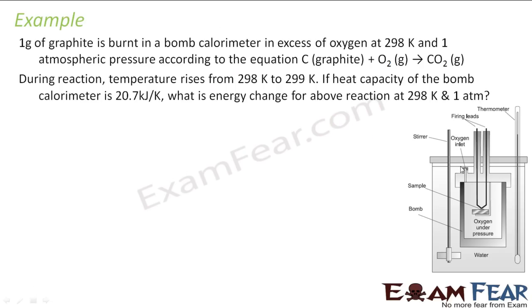Let's take one example. One gram of graphite is burned in a bomb calorimeter in the excess of oxygen at one atmospheric pressure. During this reaction the temperature rose by one Kelvin. Heat capacity of the bomb calorimeter is given. We need to find the energy change for this reaction.